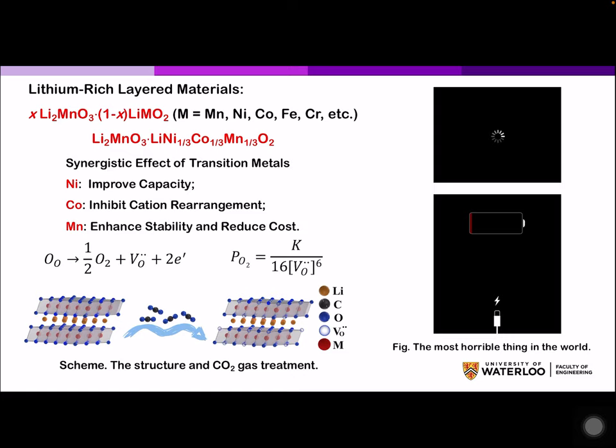nickel, cobalt, and manganese are like forming a stable triangle with their synergistic effect. Nickel can improve the capacity, while cobalt can inhibit cation rearrangement. And manganese is here to enhance the stability and reduce the cost.